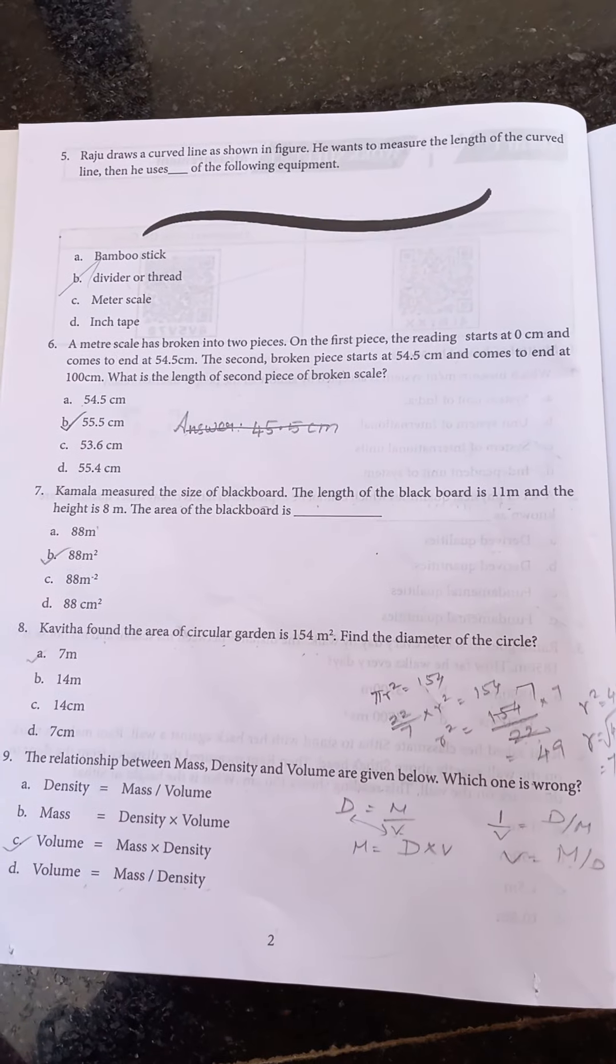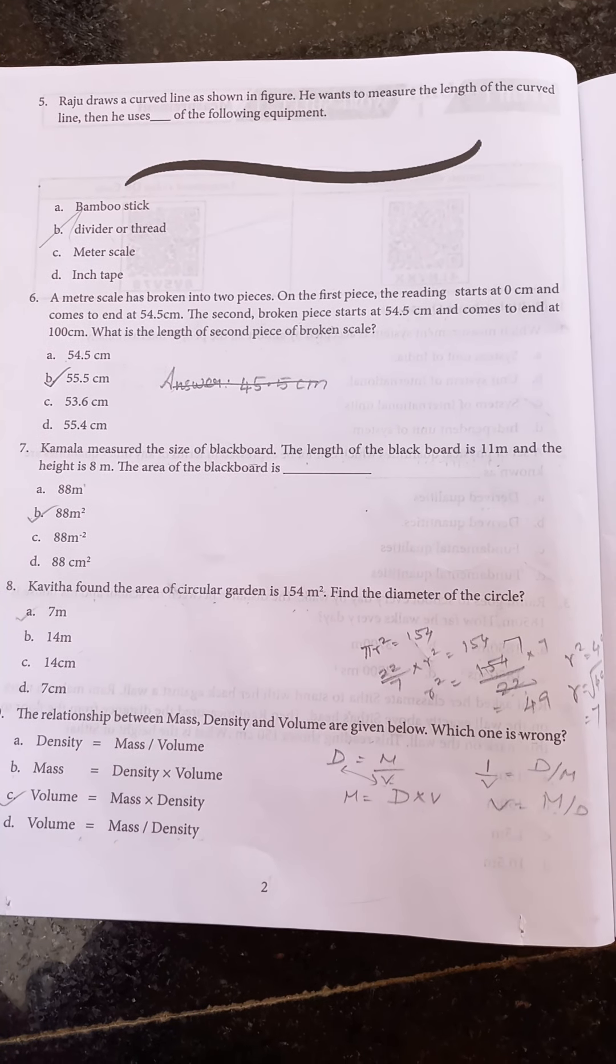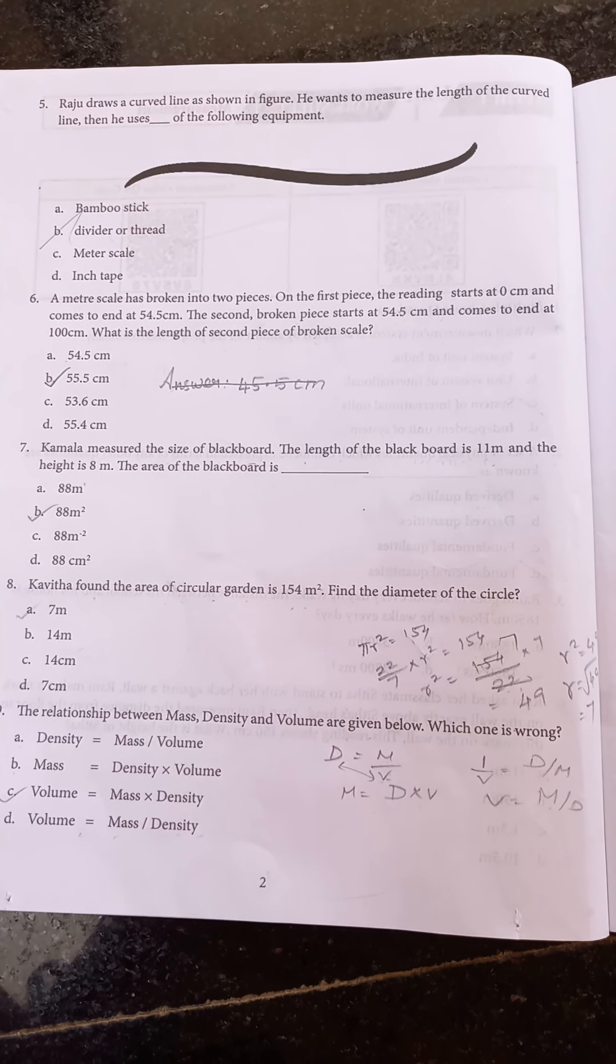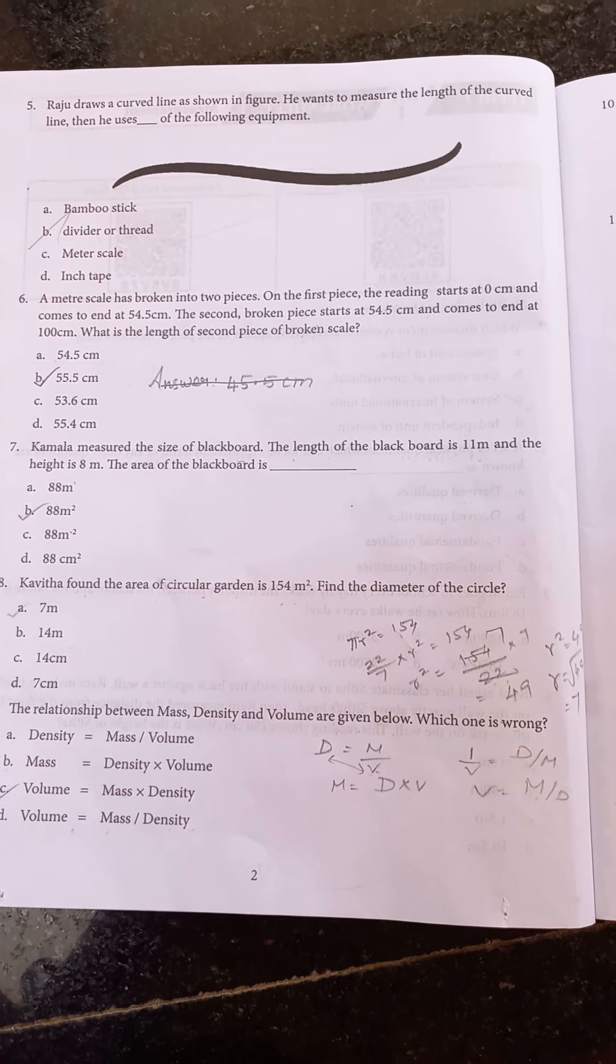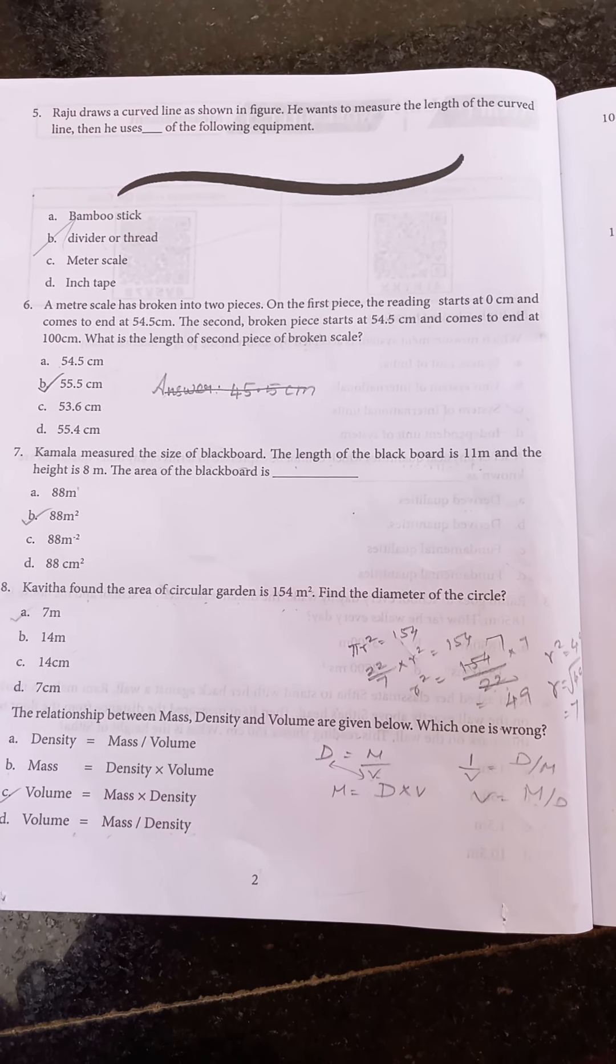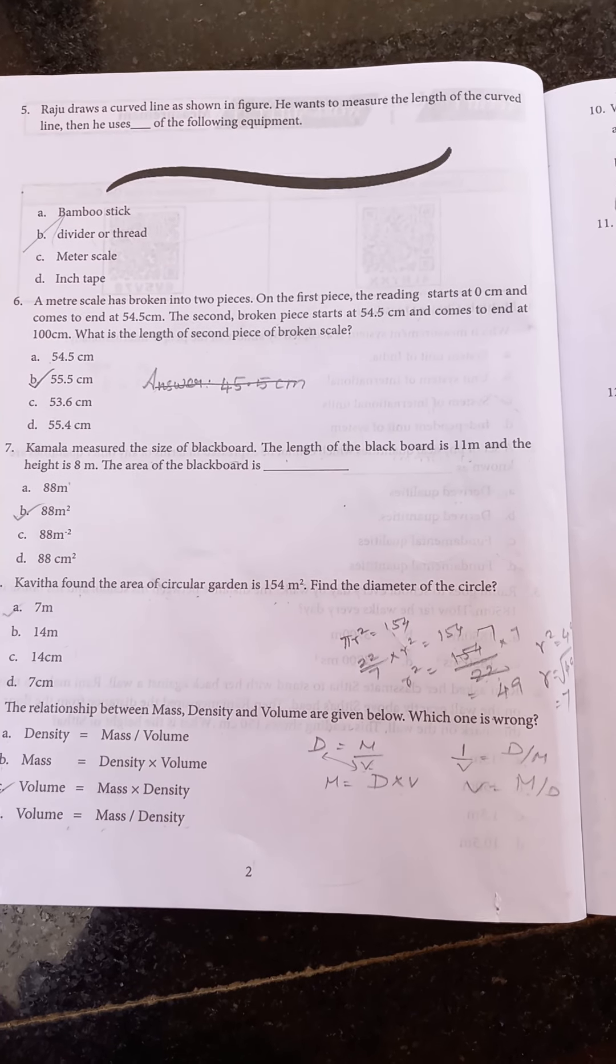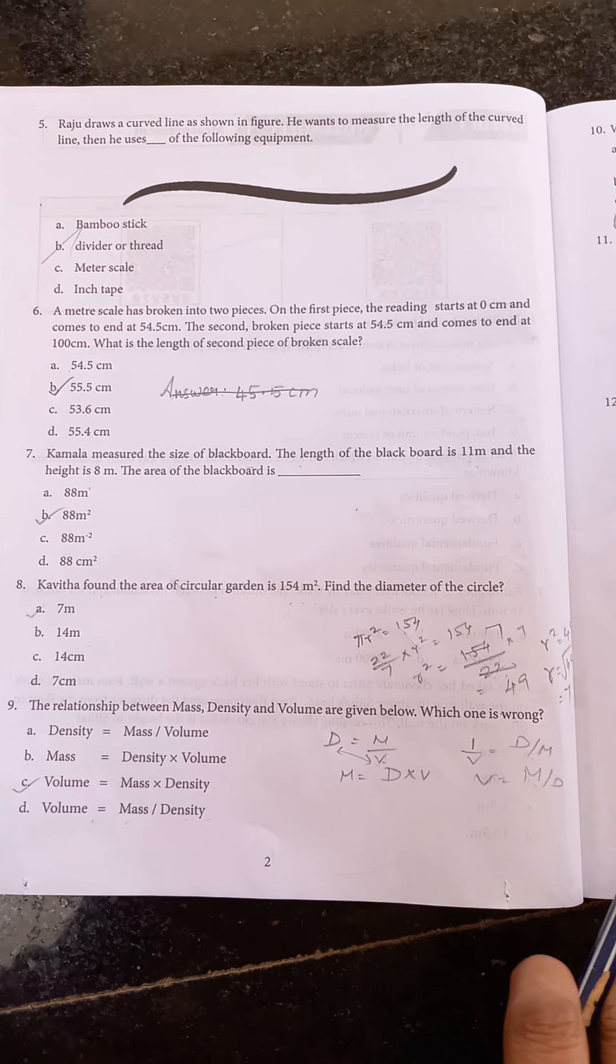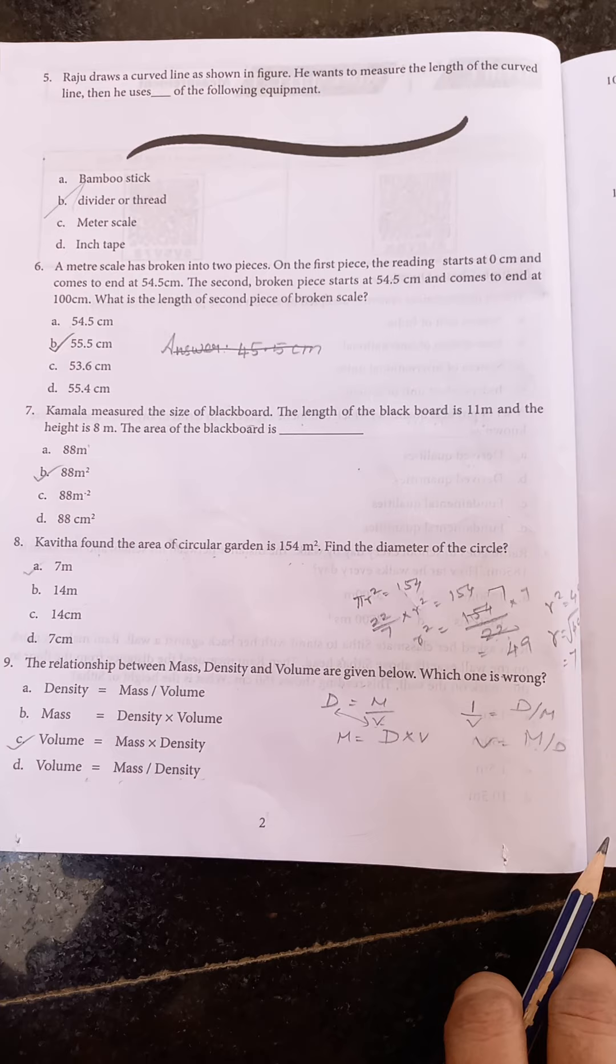Next question: Kamala measured the size of blackboard. The length of the blackboard is 11 meters and the height is 8 meters. The area of the blackboard is 88 meter square. Kavitha found the area of circular garden is 154 meter square. Find the diameter of the circle. The diameter is 7 meters.